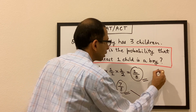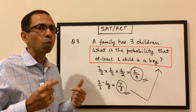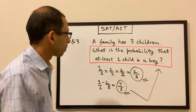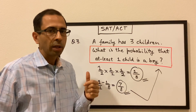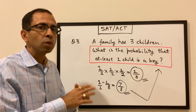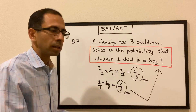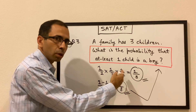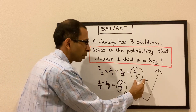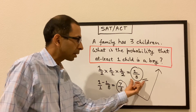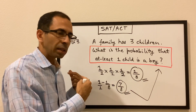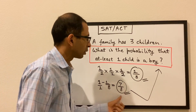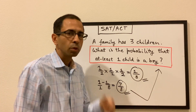So 1 minus 1/8 gives the probability of having at least one boy, which is 7/8. To reiterate: we found the probability that all three children are girls — multiplying individual probabilities to get 1/8 — then subtracted from 1. So 7/8 is the answer.